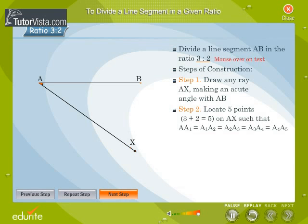Step 2: Locate 5 points (3 + 2 = 5) on AX such that AA₁ = A₁A₂ = A₂A₃ = A₃A₄ = A₄A₅.